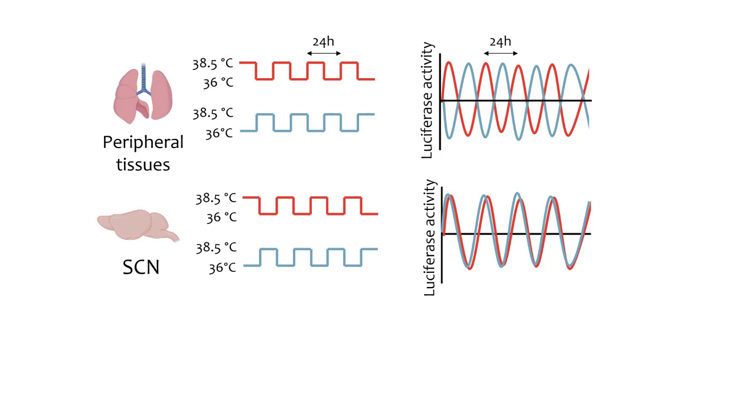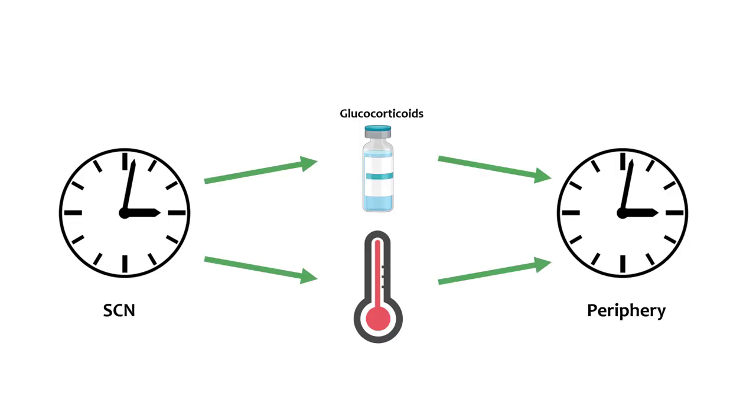The dexamethasone and temperature treatments show that peripheral cells are sensitive to different entraining signals than SCN cells. We still don't know exactly how the SCN entrains peripheral clocks, but glucocorticoids and temperature are both potential ways that these peripheral clocks in our bodies are synchronized to the light cycle by the SCN. We'll see you next time.